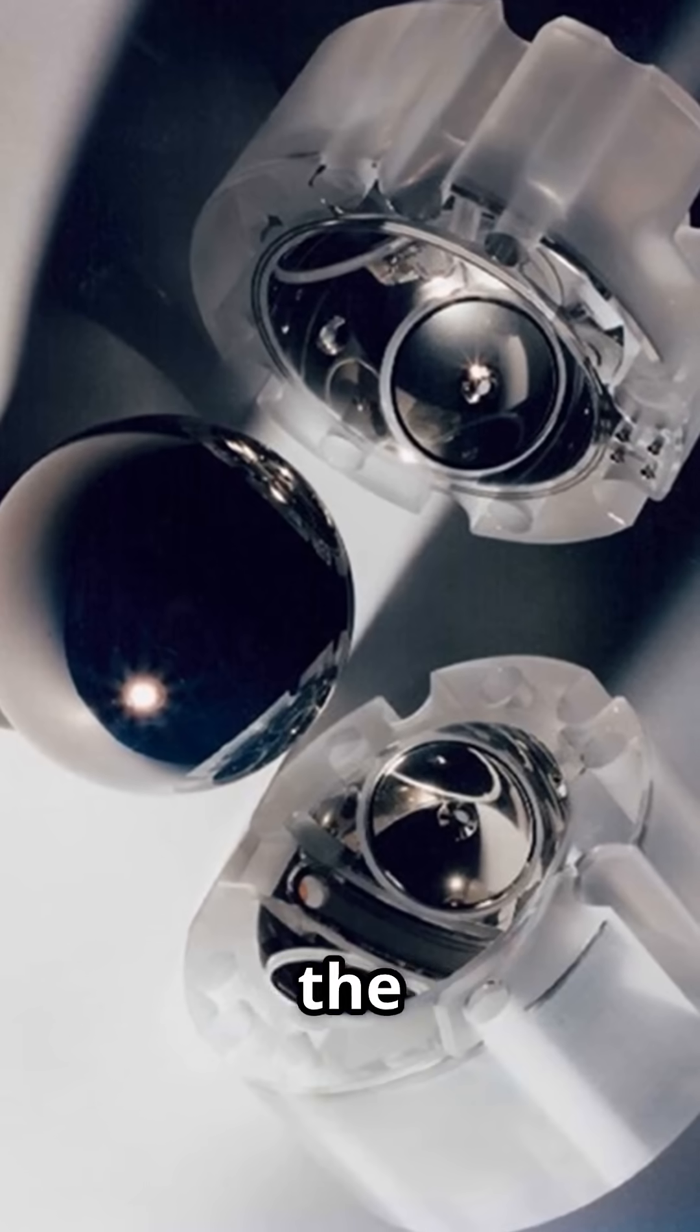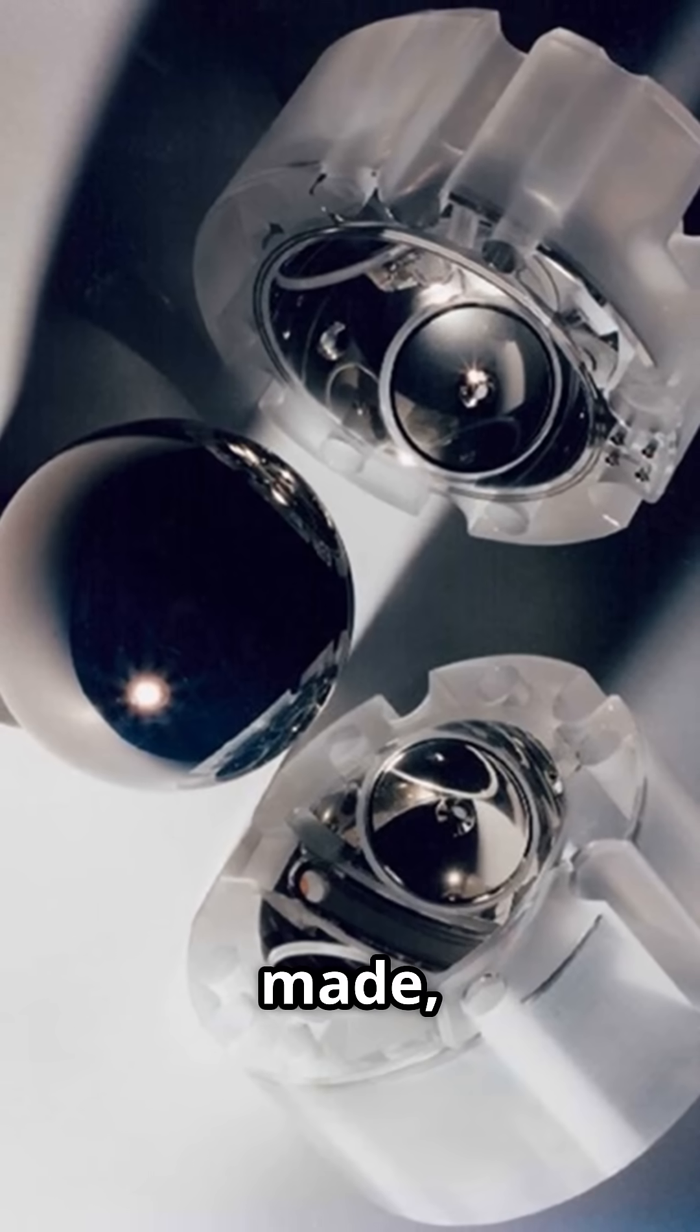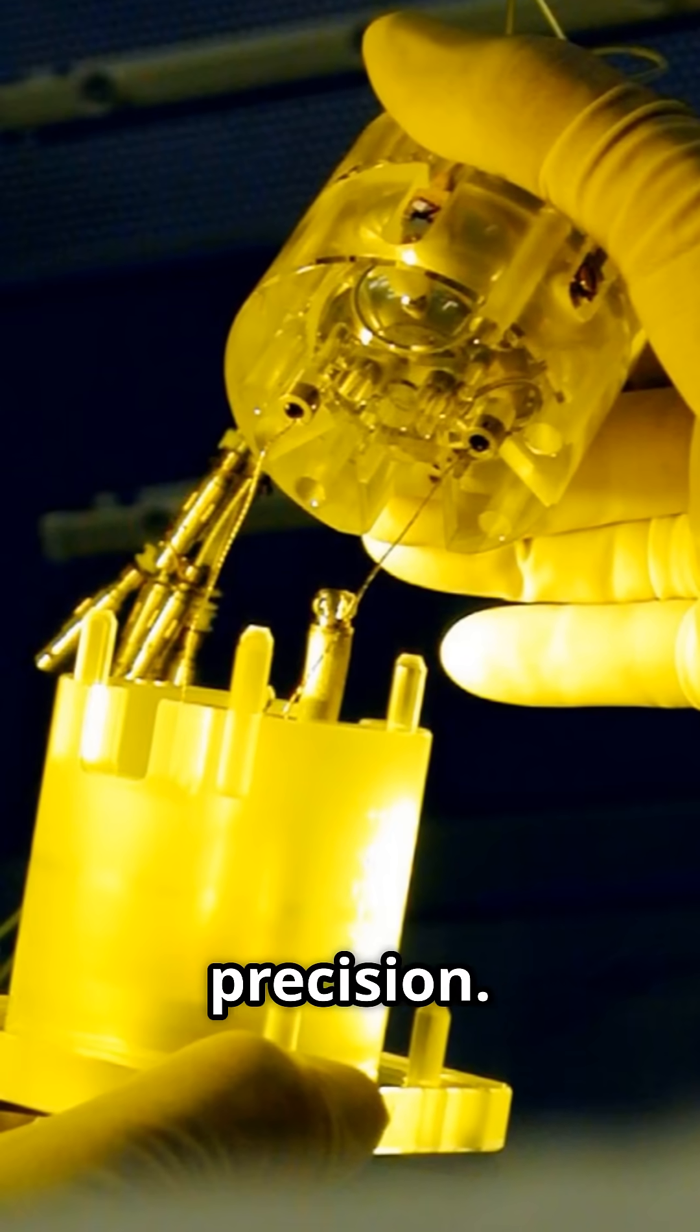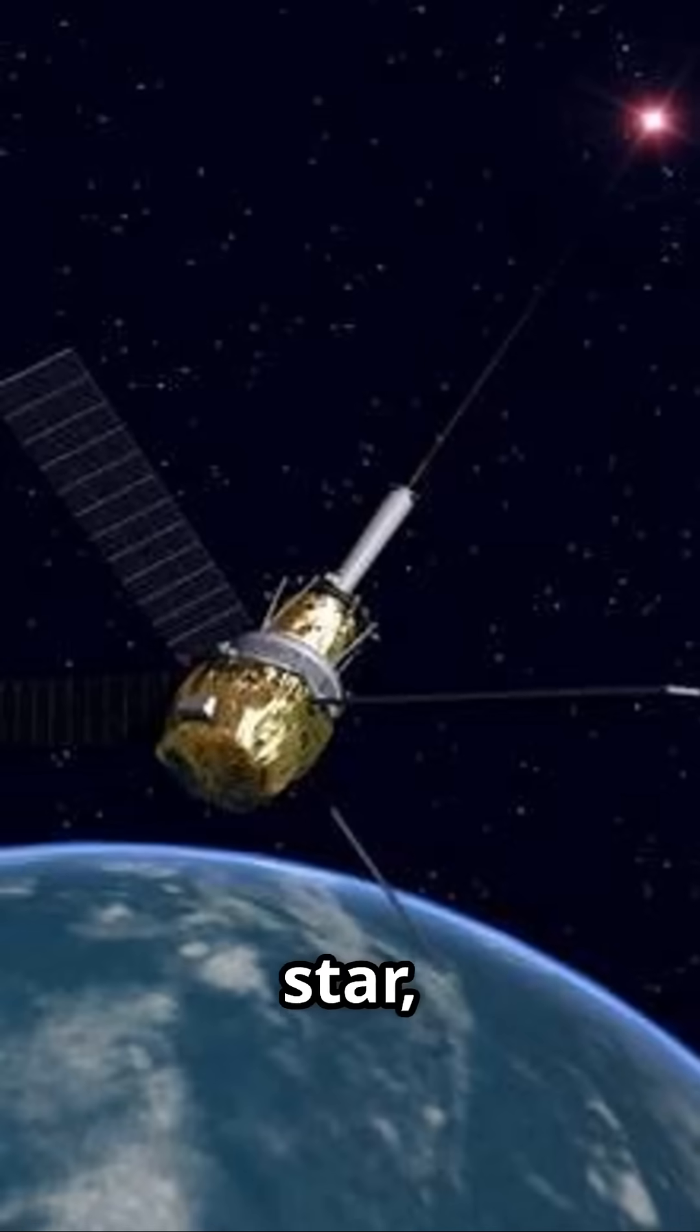The gyroscopes were among the most perfect spheres ever made, spinning with incredible precision. By aligning with a distant star, they measured tiny shifts in their spin direction.